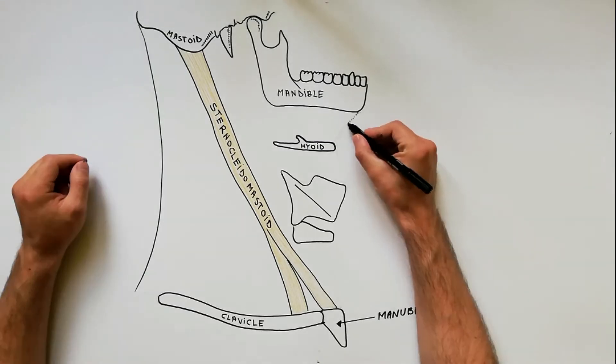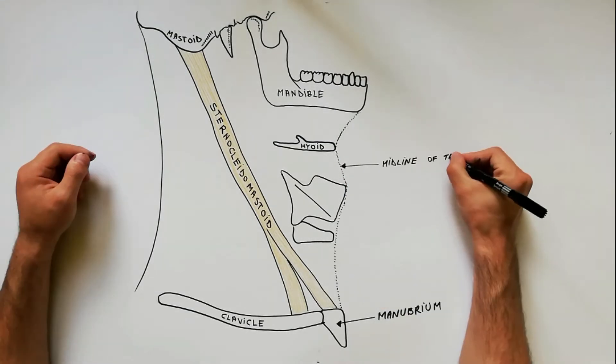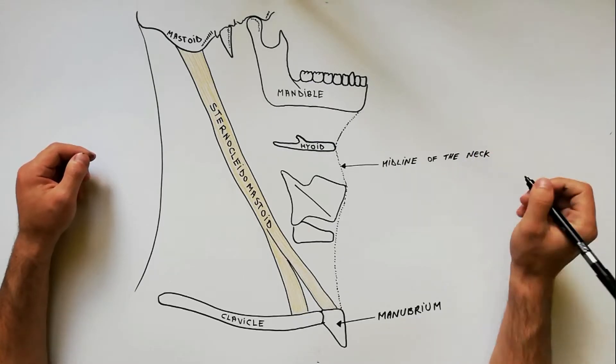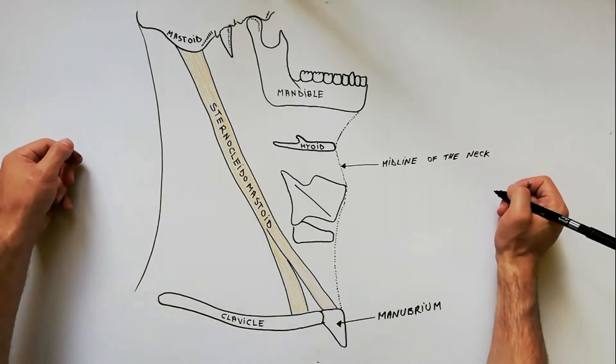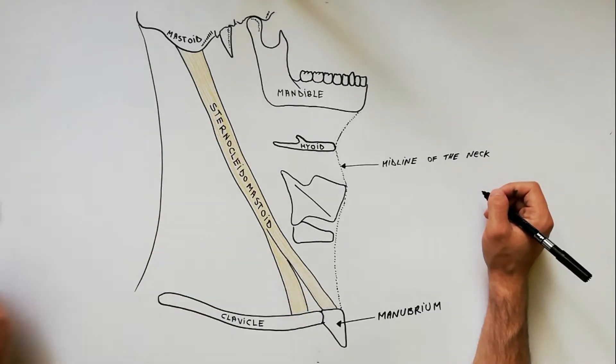The anterior boundary is the midline of the neck from chin to the jugular notch of manubrium. The posterior boundary is the anterior margin of the sternocleidomastoid muscle.